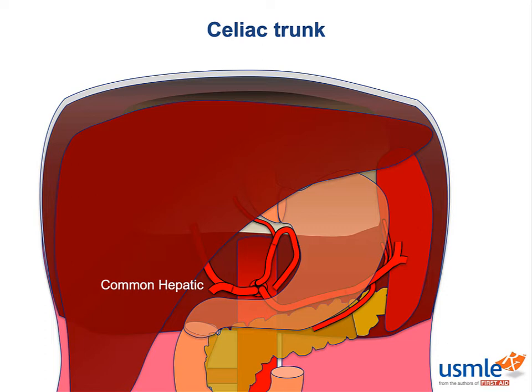The main branch of the proper hepatic you should know about is the right gastric artery, which anastomoses with the left at the lesser curvature. The gastroduodenal continues behind the duodenum and eventually emerges to become the right gastroepiploic artery at the greater curvature of the stomach. On its way, it lets off two important branches: the anterior and posterior superior pancreaticoduodenal arteries, named because they run anterior and posterior to the pancreas respectively.